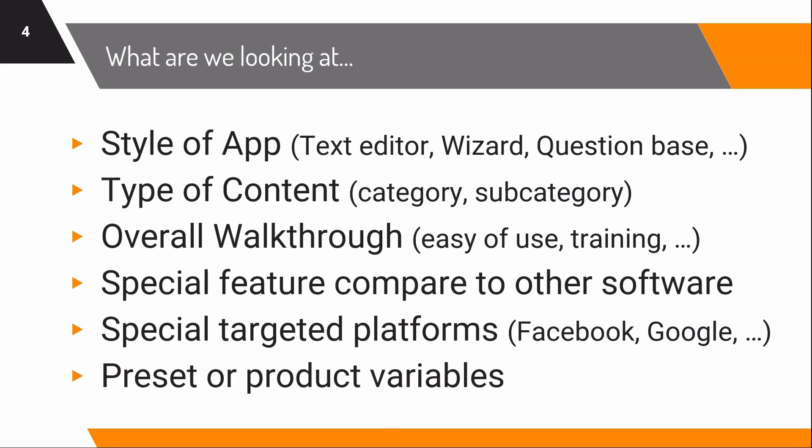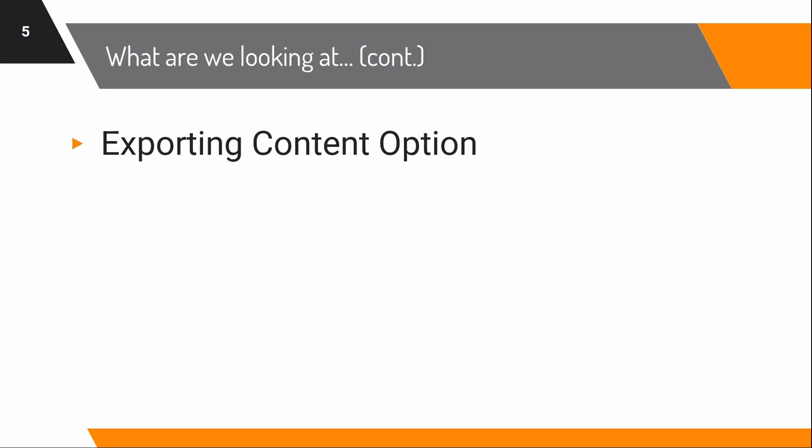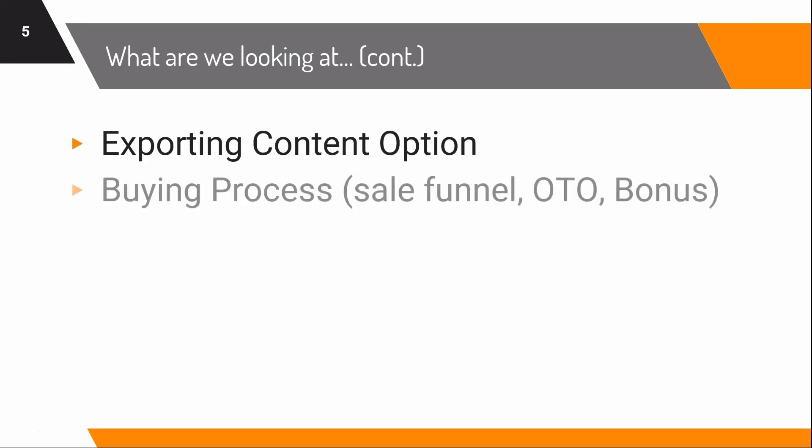We also look at special features compared to other tools, targeted platforms, and whether the software has preset product variables. This is useful if you're writing copy for the same product repeatedly, as you can set presets or product variables to reuse. We also look at export options and the buying process — the sales funnel, upsells, bonuses, and final verdict.